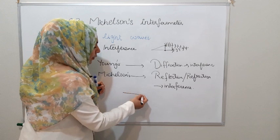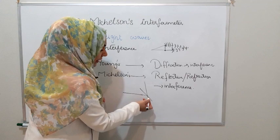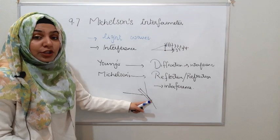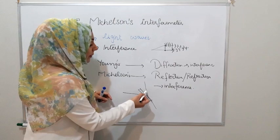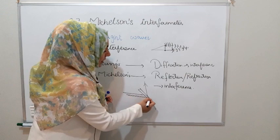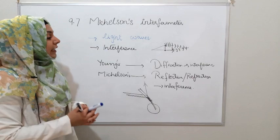In Michelson's Interferometer, what happens is different. Light reflects on a surface, and after reflection from the mirrors, the light rays interfere. When they interfere, a pattern of interference is produced.